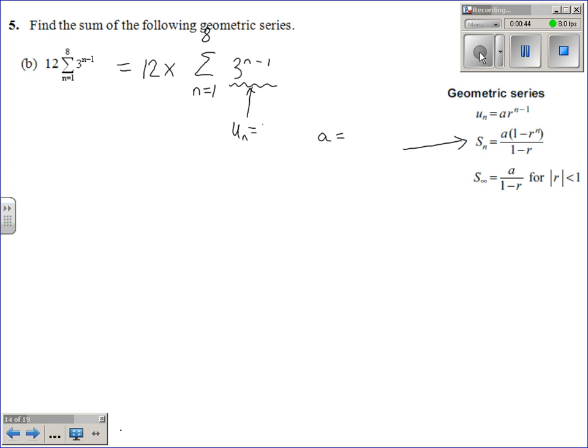So un is equal to 3 to the power of n minus 1. So if you put in n is 1, 1 minus 1 is 0, 3 to the power of 0, so you get 1. So let's just write that down so you can see what I've done. Ok, so it's 3 to the power of 0 equals 1. So that's how I've got the first term there.